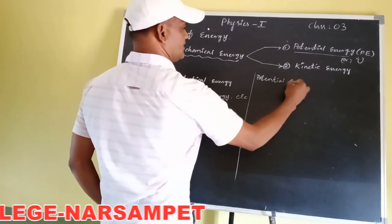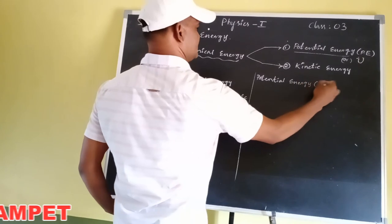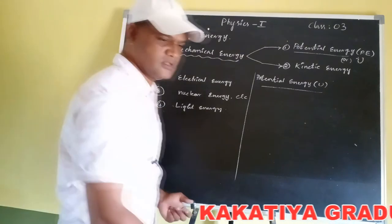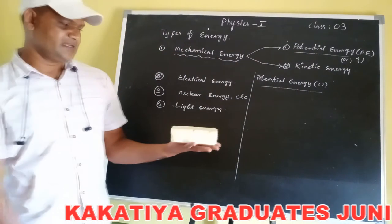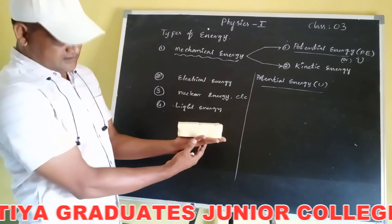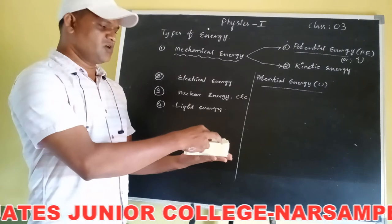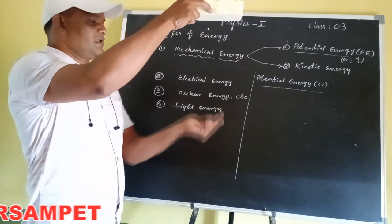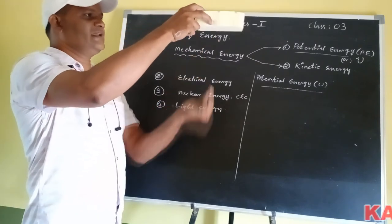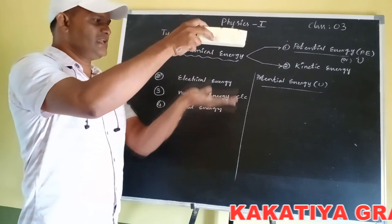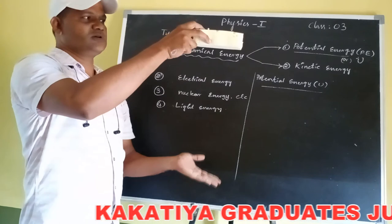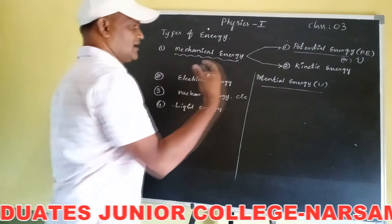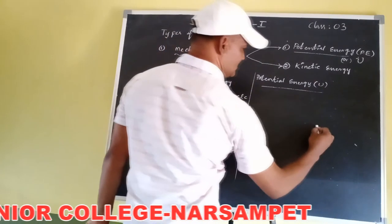Potential energy: the energy possessed by a body by virtue of its position. For example, a duster placed at the surface of the earth has no height. When we apply some lifting force, the displacement along the force direction raises it to a certain height. So here the change in position occurs in the body. The energy possessed by a body by virtue of its position or configuration is known as potential energy.